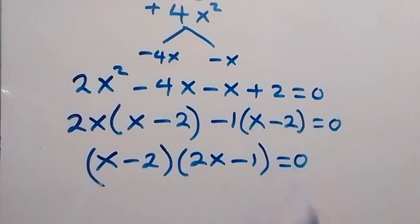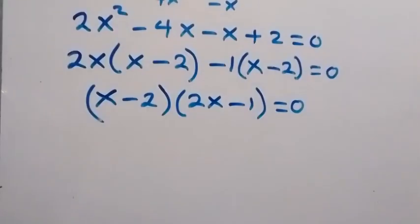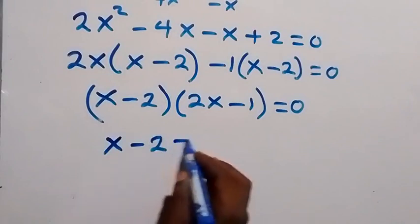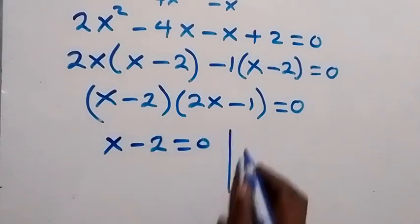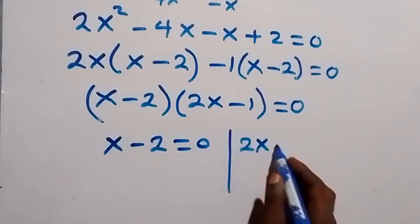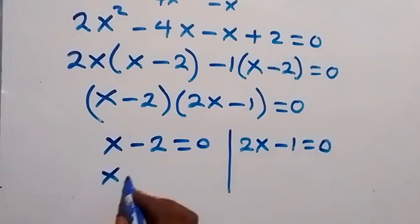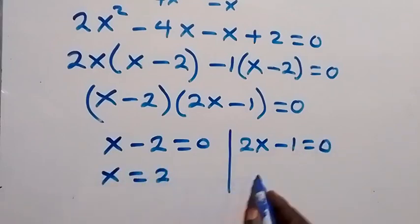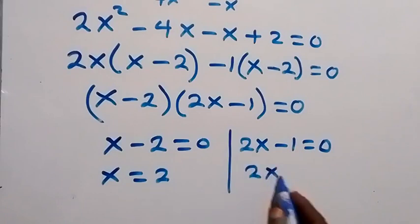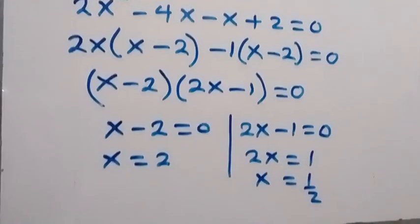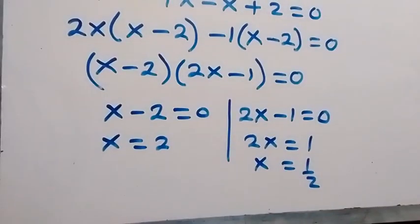From x minus 2 equals 0, we get x equals 2. From 2x minus 1 equals 0, we get 2x equals 1, so x equals 1 over 2. Since we are finding a and we represented x as root a, we now back-substitute.